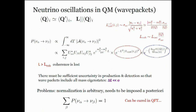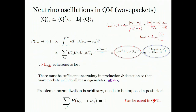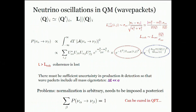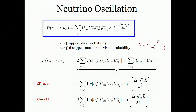Unfortunately, the normalization is lost in this wave packet treatment, so the probability does not automatically sum to one. The way to handle this is to impose unitarity — the oscillation probability from neutrino alpha to beta should sum to one over all final flavors — and that fixes the normalization. One can do better by going to quantum field theory without this unitarity requirement, but this result is a robust formula tested in many different ways, and seeing deviations would be extremely difficult.